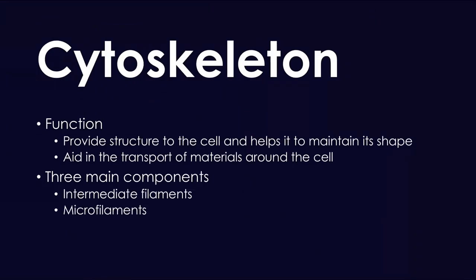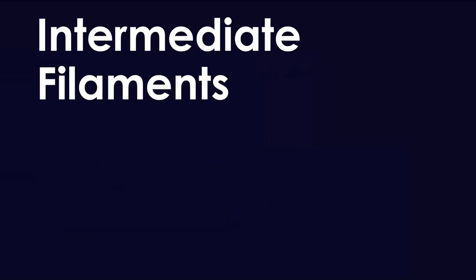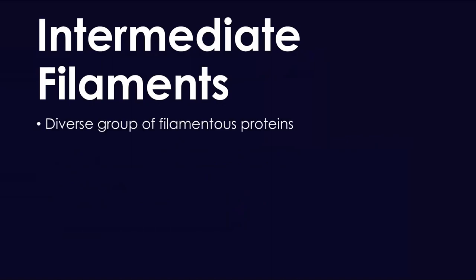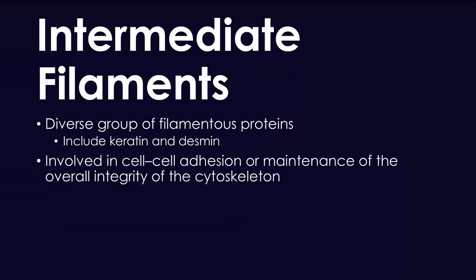The three main components are intermediate filaments, microfilaments, and microtubules — all of which are pretty high yield and important things you should definitely know. We have intermediate filaments, which are a group of diverse filamentous proteins that include keratin and desmin, and they're involved in cell-to-cell adhesion or maintenance of the overall integrity of the cytoskeleton.